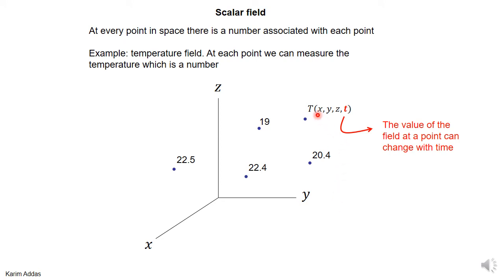And the temperature at a certain point can change with time. If you go to this point and you measure the temperature now, and then you wait for another five minutes and you measure the temperature again, the temperature might be different. So in general, the temperature field depends on position, but it also depends on time.